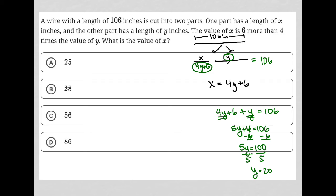The question wants to know the value of X, however. So if Y is 20, I know that X equals 4Y plus 6. Remember, we have that there. So this would be 4 times 20 plus 6. Four times 20 is 80, 80 plus 6 is 86. So our answer is choice D.